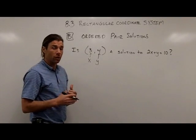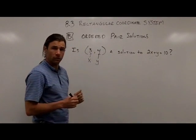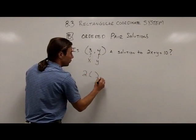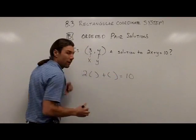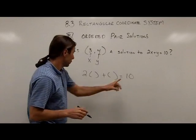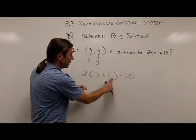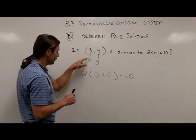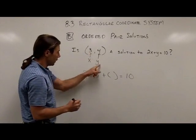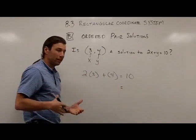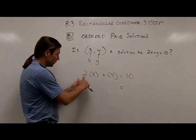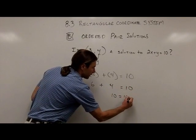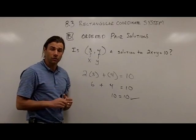So to determine whether this is a solution, all I have to do is plug these values into the equation. So I'm going to take this 2x plus y equals 10. I would write an open set of parentheses wherever I'm going to substitute a value for the variable. So notice here was my x, open set of parentheses. Here's my y, open set of parentheses. For the x value, I'm putting a 3. For the y value, I'm putting a 4. Now all I have to do is check to see if this works. So I would go 2 times 3 is 6. So I have 6 plus 4 equals 10 or 10 equals 10. And it does work.